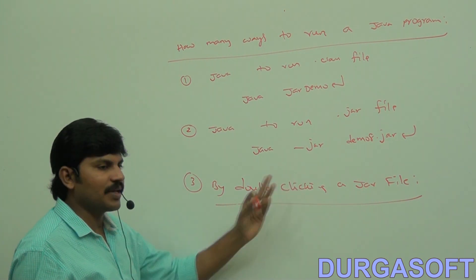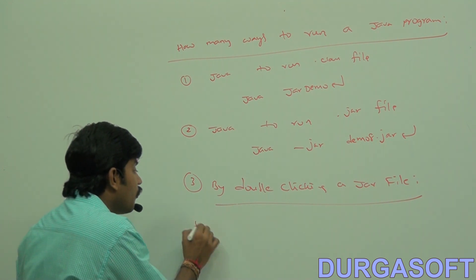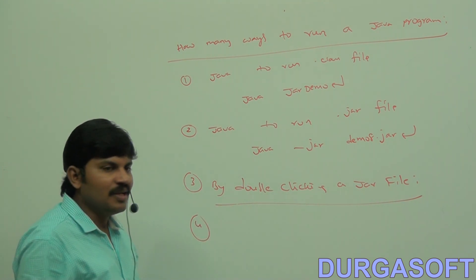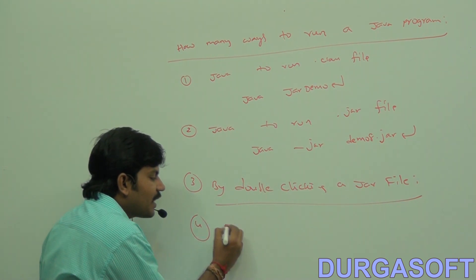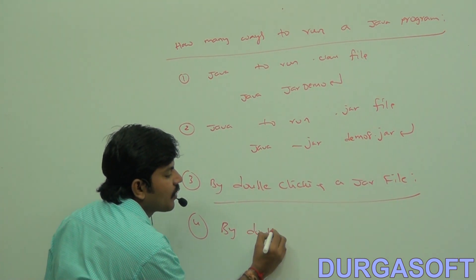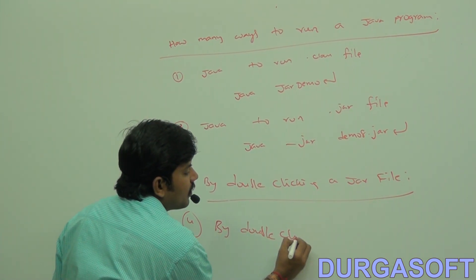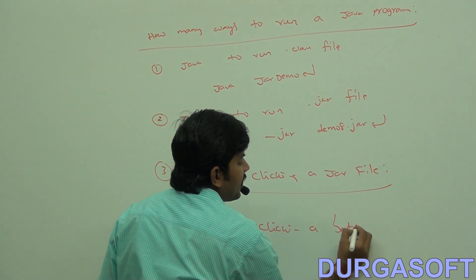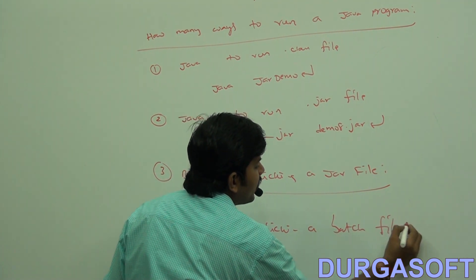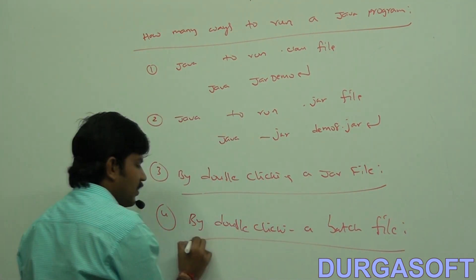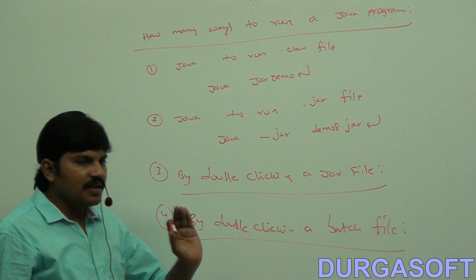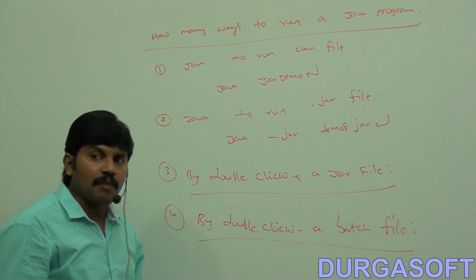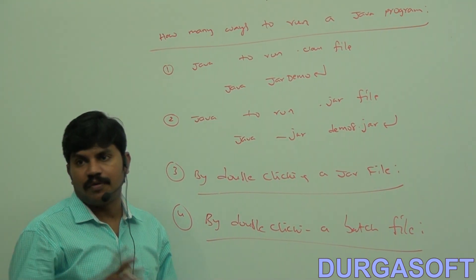The fourth way is by double-clicking a batch file. By double-clicking the batch file, we can happily run a Java program.